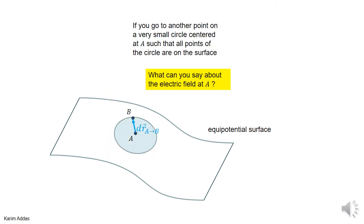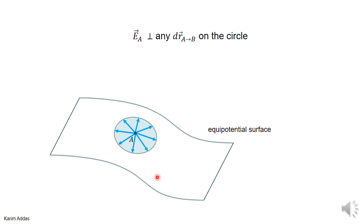What if we take the dr vector pointing in different directions? We make a circle surrounding point a where every point on the circle lies on the equipotential surface, so all points have the same potential as a. Using the same argument, the electric field at a must be perpendicular to every one of these dr vectors pointing from a to any point on the rim of the circle, since the potential difference is zero in every case.